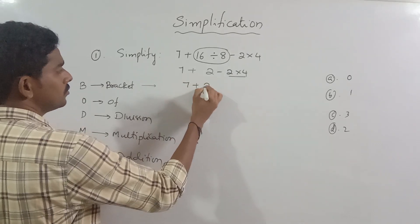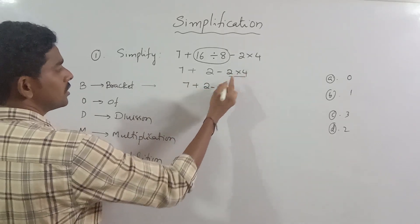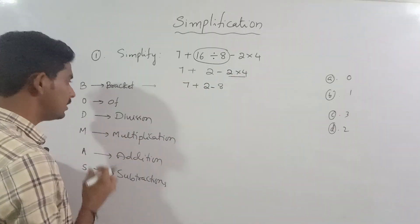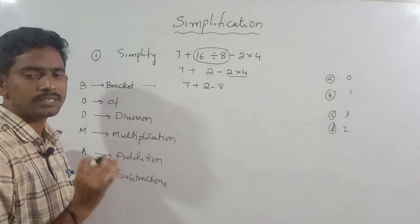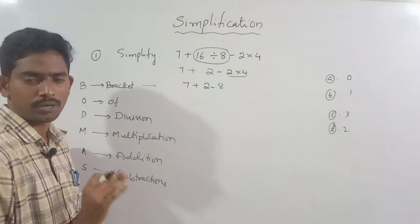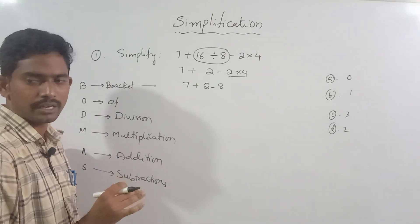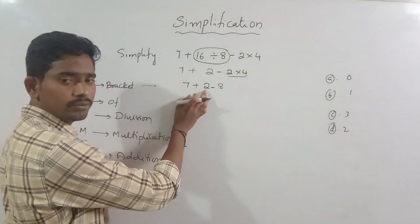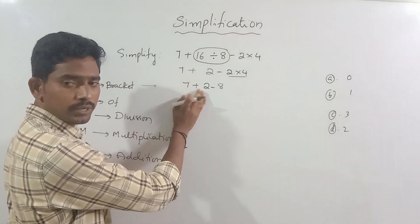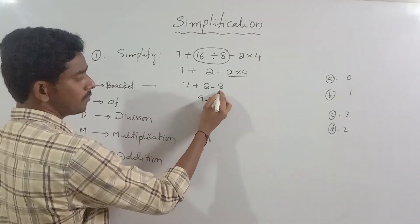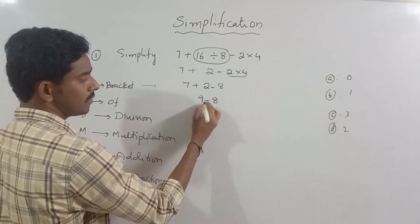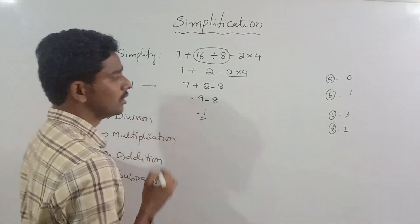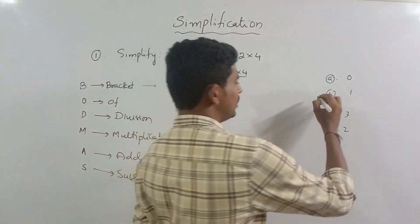Next, we will multiply. 7 plus 2, minus 8. Here are positive numbers and negative numbers. 7 and 2: 7 plus 2 is 9. 9 minus 8: 9 minus 8 is 1. This is automatically subtraction. So this is correct.